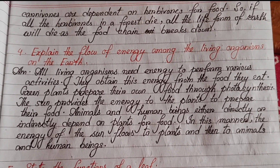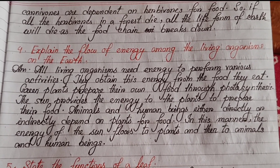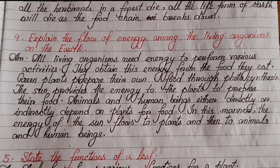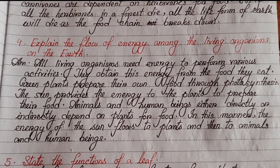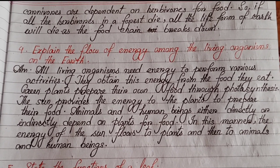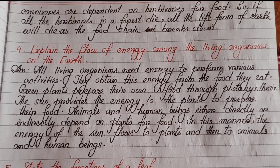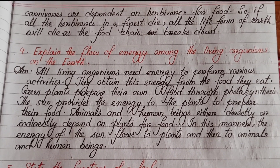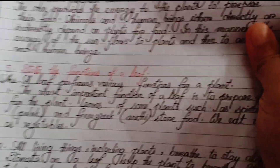Number four: Explain the flow of energy among the living organisms on earth. All living organisms need energy to perform various activities. They obtain this energy from the food they eat. Green plants prepare their own food through photosynthesis. The sun provides energy to plants to prepare their food. Animals and human beings either directly or indirectly depend on plants for food. In this manner, the energy of the sun flows to plants and then to animals and human beings.